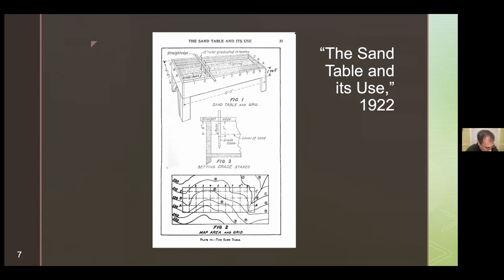A wire grid would often be strung across the topmost edges of the table to help translate to and from topographical maps. It's important to me that as a furnishing — as a table — possessed of this kind of verticality, the sand table is literally elevating its media platform to something like waist height, thereby bringing it into alignment with other tabletop activities, including reading and writing.